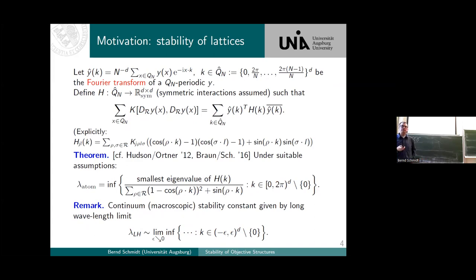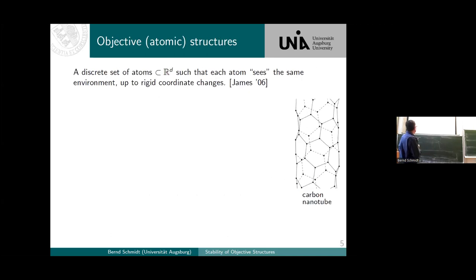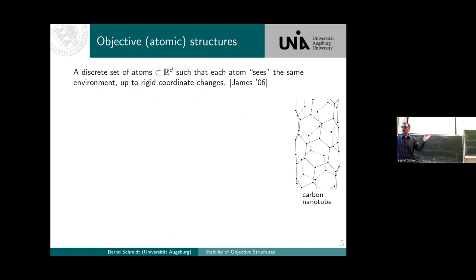Now let's go to something more complicated — I would like to discuss objective structures. Objective structures is something that Dick James from Minnesota invented a couple of years ago in order to generalize the idea of Bravais lattices. So what is a Bravais lattice? A Bravais lattice is: if you sit on a point and look around and see all the other atoms, you see exactly the same environment from every point.